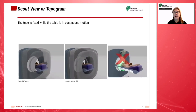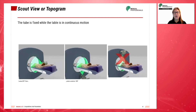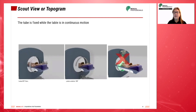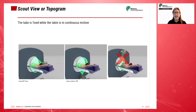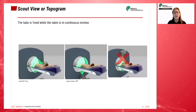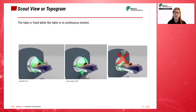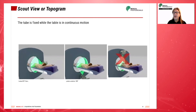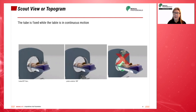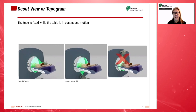A scout image is a low-dose digital radiograph formed from a linear scan and taken as the table moves through the gantry with the x-ray tube stationary — for example, at zero degrees or at 90 degrees.